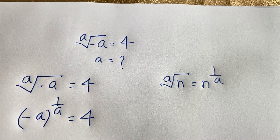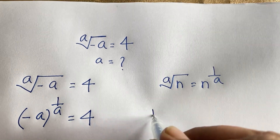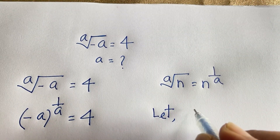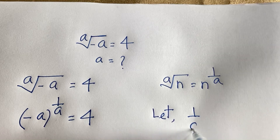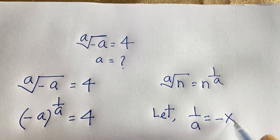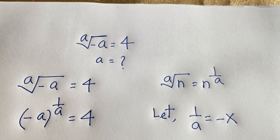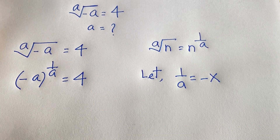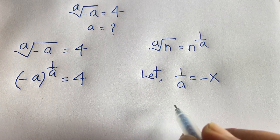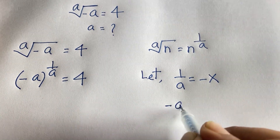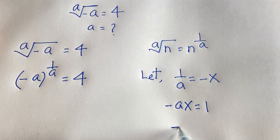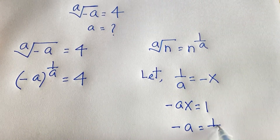Now, let 1 over a equal minus x. From this substitution, we get minus a times x equals 1, which means minus a equals 1 over x.